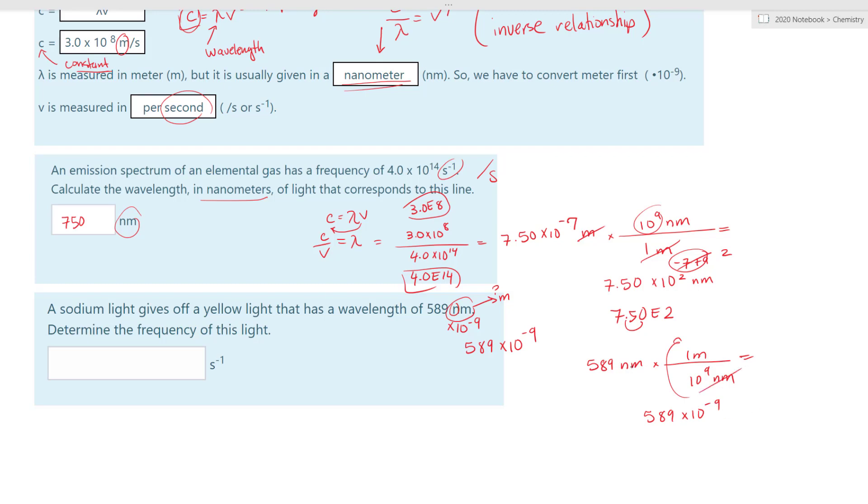So you can see how we can use the exponent rule to make our math process a lot faster, if this is multiple choice. So let's plug into the calculator. We have c equals lambda times ν. So in this case, we are solving for frequency. So ν is equal to c. So remember, c is a constant. So let's plug into our calculator. C is the speed of light constant. So 3.0 times 10 to the 8th.